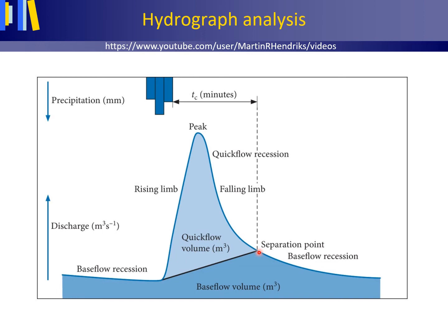The inflection point is the separation point determined by assuming that the recession curve can be modeled as the discharge from linear reservoirs that represent quick flow and base flow. Finally, the time of concentration is the time required for surface water or other water contributing to the quick flow of a stream to flow from the farthest point in the watershed to the outlet.